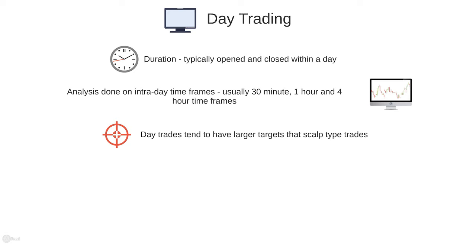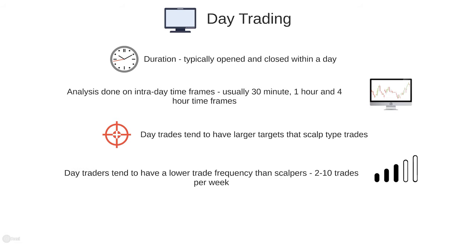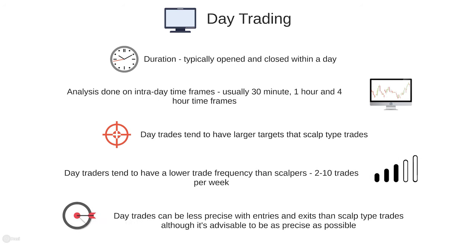As the trades take longer to set up and play out compared to scalping, the frequency of these trades is lower. I would say on average a day trader may take between 2 to 10 trades per week, and so they may tend to risk a little bit more on each trade than a scalper would — maybe somewhere between 0.5% and 2%. Entries and exits can also be a little less precise than when scalping, as typically a day trade won't be as impacted by small mistakes. That said, I think it is good practice to have precise entry and exit techniques when day trading to maximise your profitability.